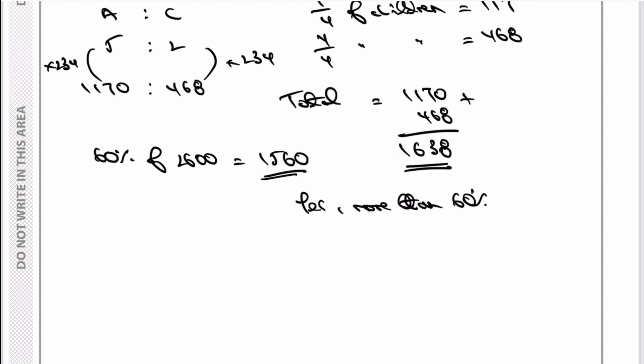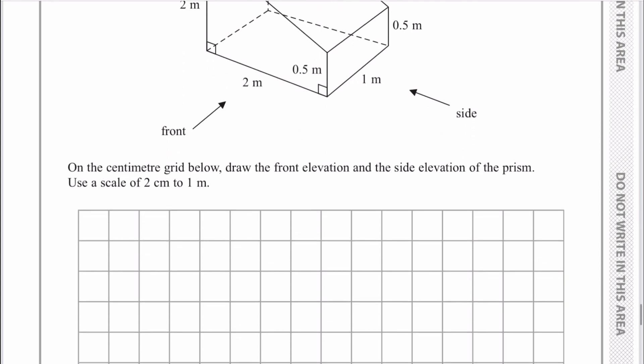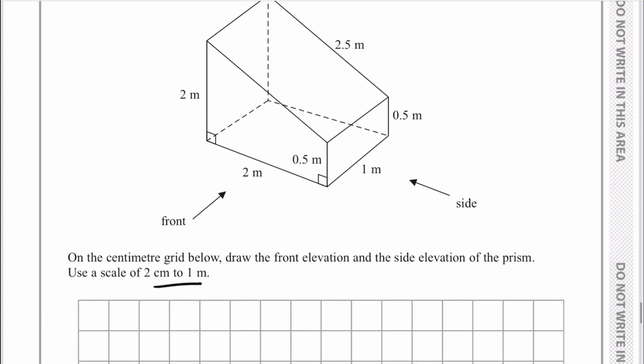Question 19 is a relatively straightforward cross-sectional front and side elevation. The key issue is the scale: 2 centimeters to 1 meter. So on the grid, rather than drawing 2 meters, I'm going to draw 4 centimeters. This would be 4 centimeters, and the width would be 2 centimeters. For the front elevation, I've got 4 centimeters down, 4 centimeters along, then 1 centimeter and a sloping line connecting the two.